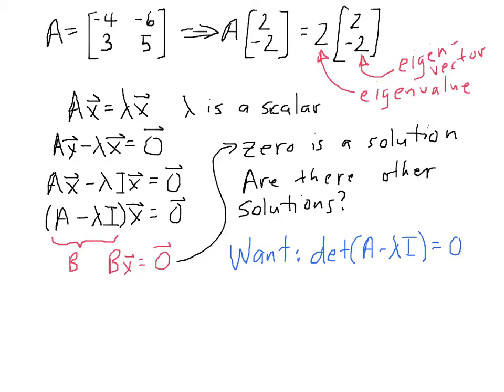So let's find A minus lambda I. That's our first step then to actually figuring out what lambda should be. So A minus lambda I is equal to negative 4, negative 6, 3, 5 minus lambda times 1, 0, 0, 1.